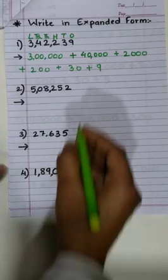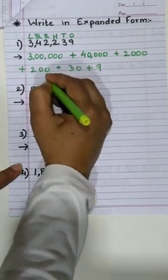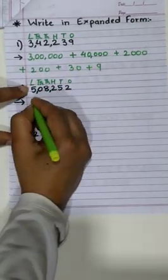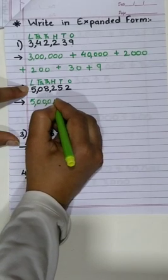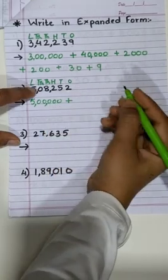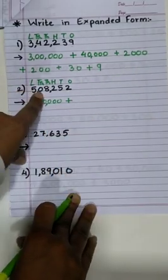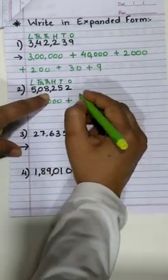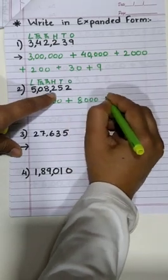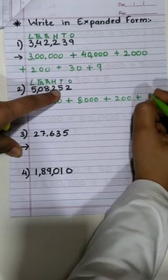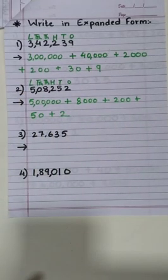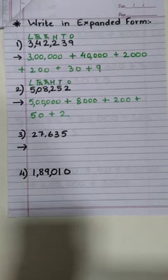Let me give you one more example. Write the periods on the top. The place value of 5 is 5 lakh. 10,000 gives us 0, so we don't need to mention it over here. We'll directly go to the thousands column: 8,000 plus 200 plus 50 plus 2. Easy, isn't it? So can you try the remaining two on your own? Let me see if you can do it or not.